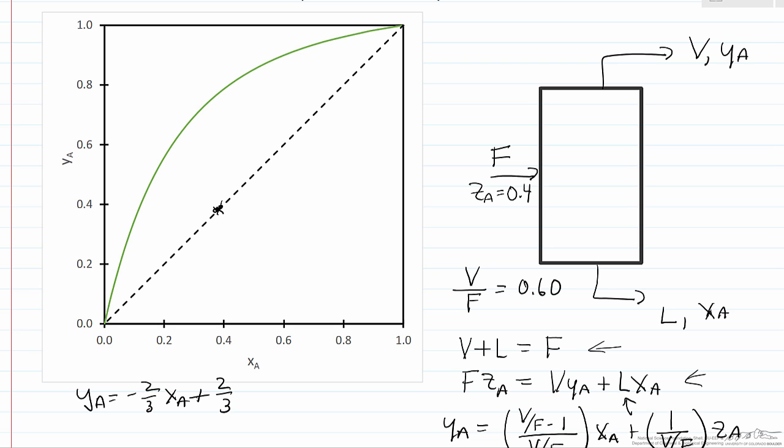Now another point, when XA is 0, YA is two-thirds, so that's about here.